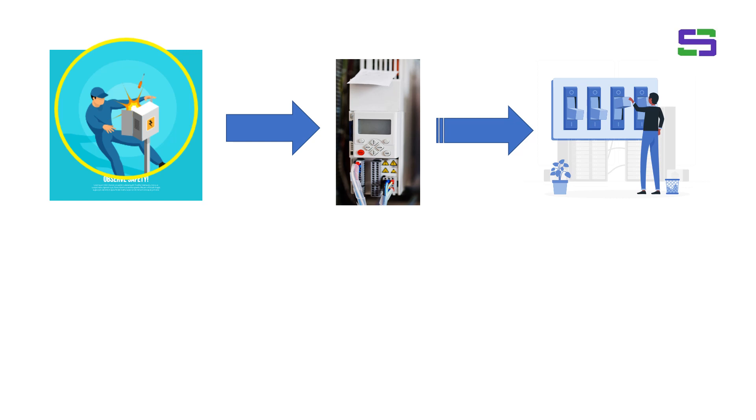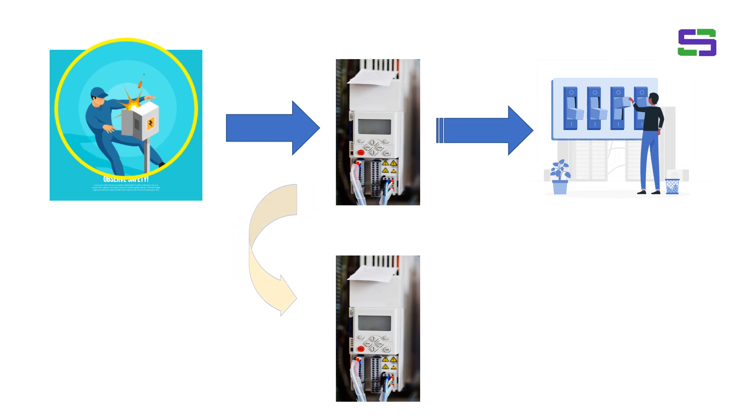But how this coordination will be done, what time it will take to give that tripping command to the upstream circuit breaker, that depends on the coordination with the downstream network. Basically, it will check the downstream network relay coordination as well.